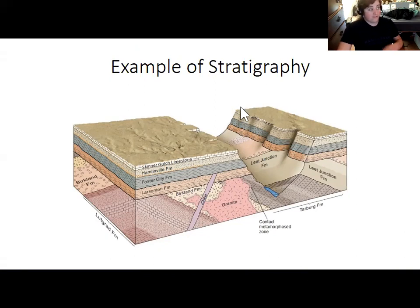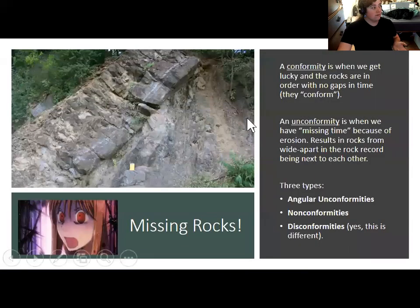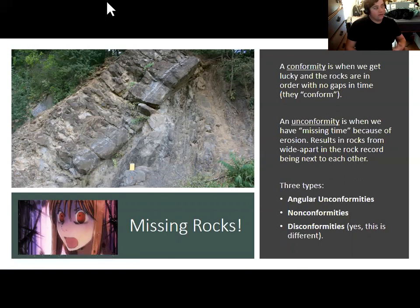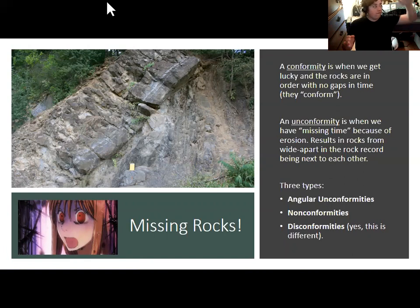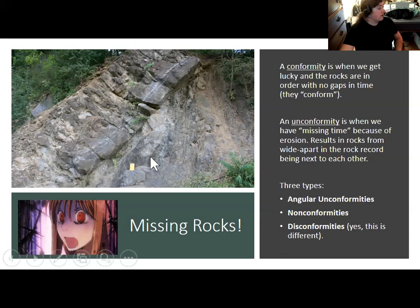Our rock record is not perfect. A conformity is when we have rocks in order with no gaps in time. More frequently, we have sequences with an unconformity — missing time as a result of erosion. Erosion breaks rocks down, and when that happens we no longer have rocks from that period to study. This can result in rocks from vastly different times in the geologic timescale being right next to one another. An angular unconformity occurs when horizontal sediment layers lie over tilted sedimentary layers.